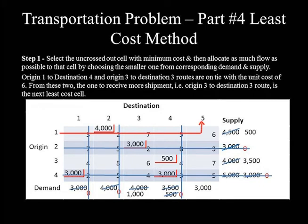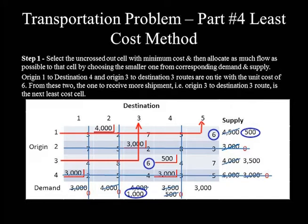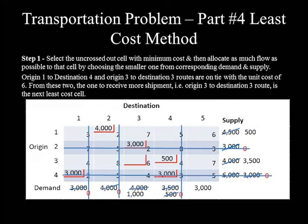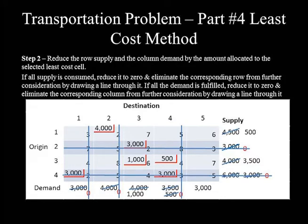Origin 1 to Destination 5 and Origin 3 to Destination 3 are tied with a least unit cost of 6. The maximum allocable to O1→D5 is 500, while for O3→D3 it is 1,000. Since Origin 3 to Destination 3 can receive the greater flow, it is selected as the next least cost cell. Allocating 1,000 reduces demand to 0 and supply to 2,500. Since Destination 3 demand is reduced to 0, column 3 is crossed out.